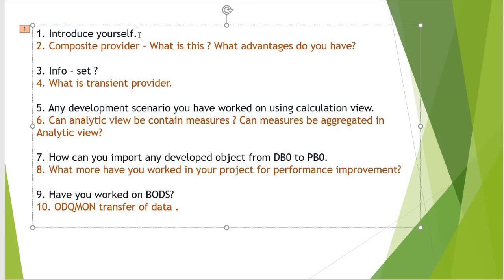The third question is about InfoSite — it is from the old BI version. The main use for InfoSite is for reporting purposes in joins, where it joins two or multiple tables. The fourth question is: what is a Transient Provider? It also comes from SAP HANA, and this provider was also used in older versions.